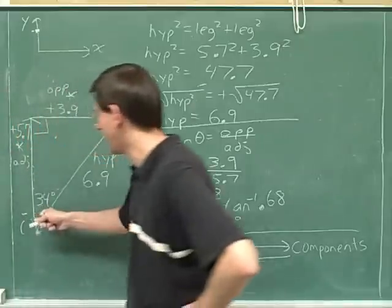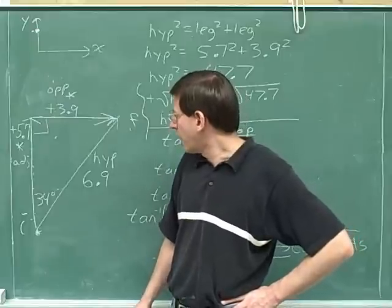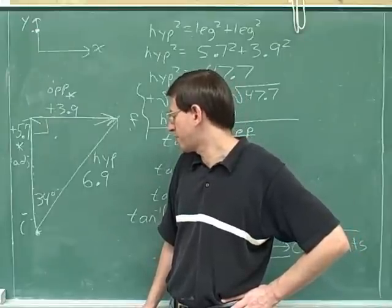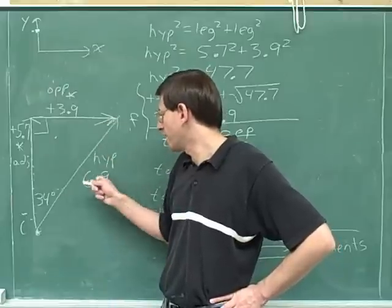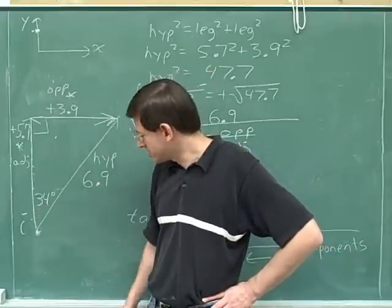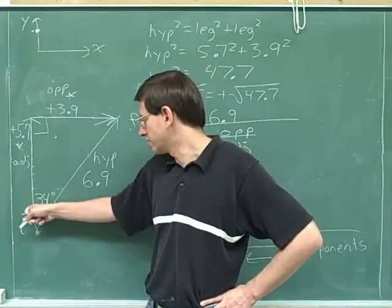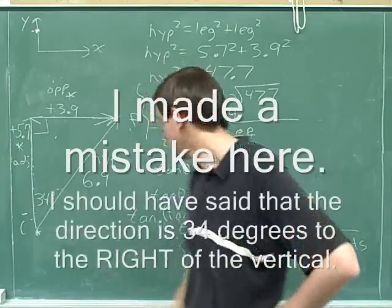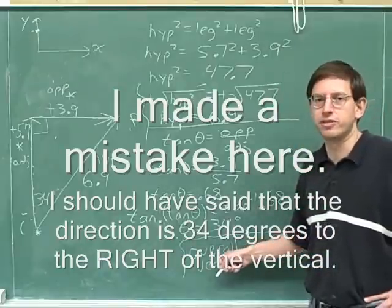That's a good way of describing the direction of our resultant displacement vector. Our resultant displacement of the two different portions of the path is a magnitude of 6.9 meters from where we started, in a direction that's 34 degrees to the left of the vertical — magnitude of 6.9. So now we've completely taken the components and described the overall vector.